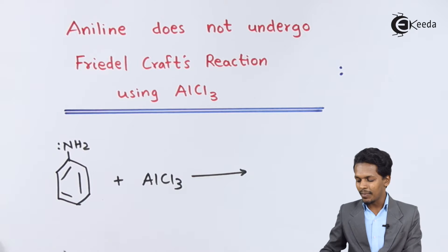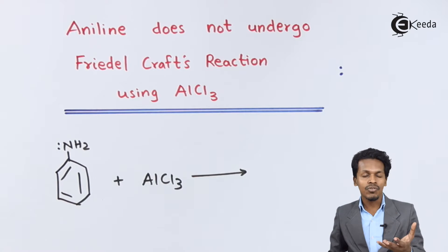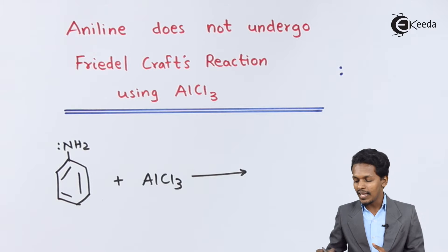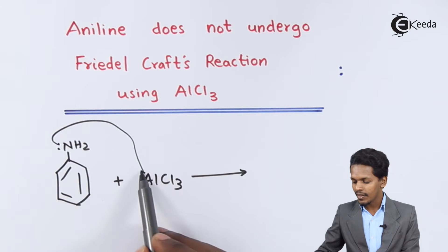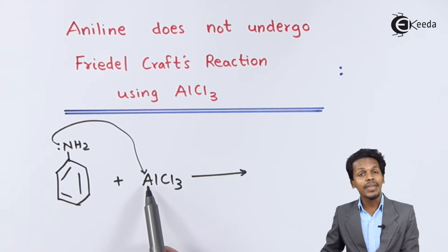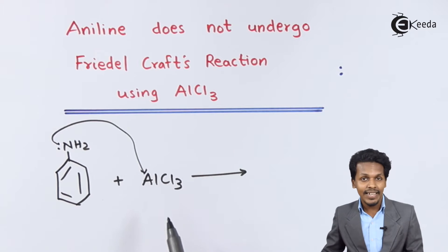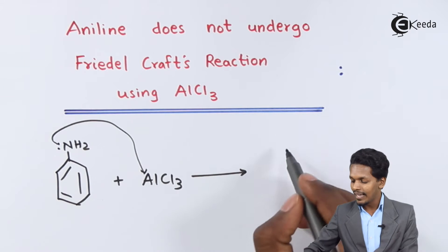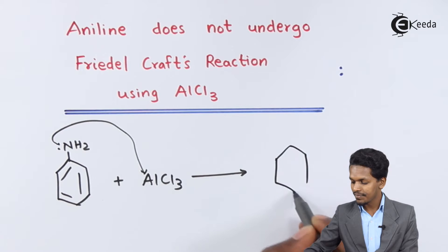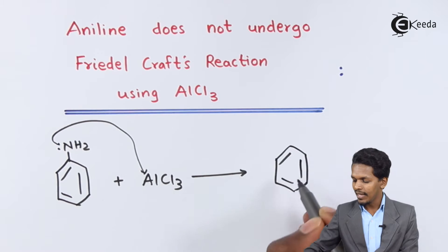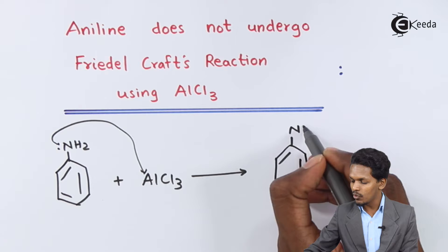AlCl3 is a very strong Lewis acid, and that's the reason we could say this electron pair will be attracted towards AlCl3. Thereby the product that we get is nothing but a salt formation that will take place.